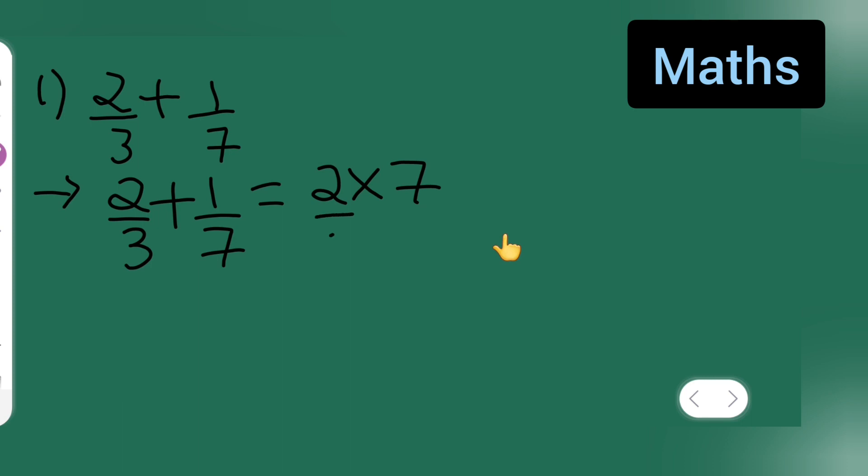By 7, and you also multiply this with 7. Plus 1 upon 7, you'll have to multiply it with 3, because the denominator what you want is...